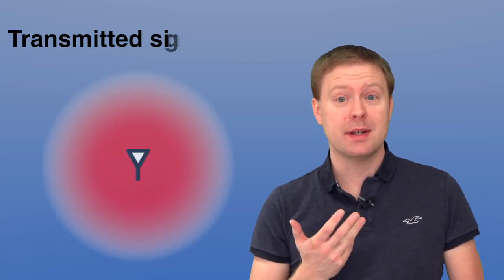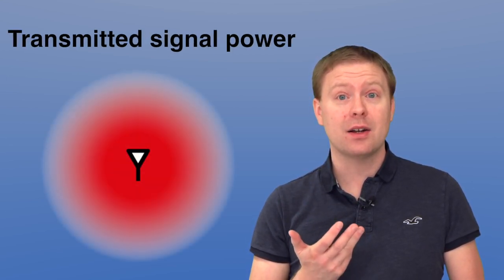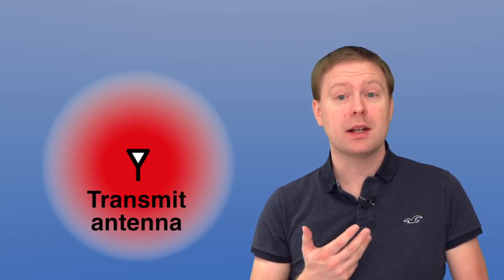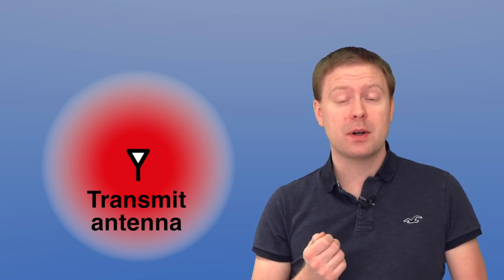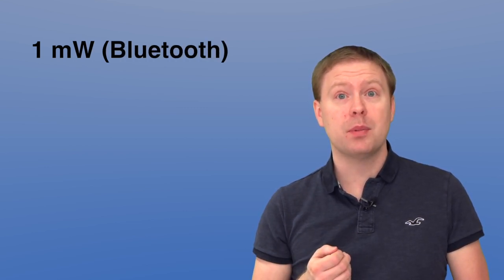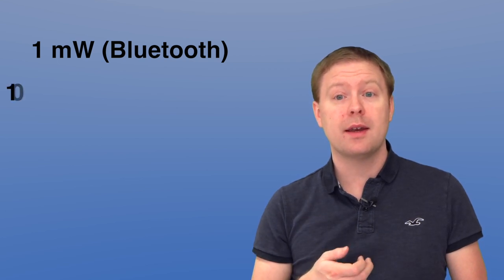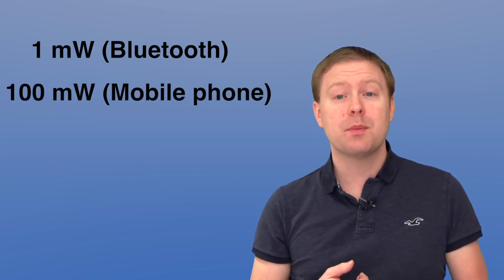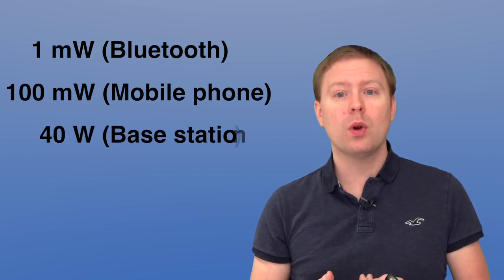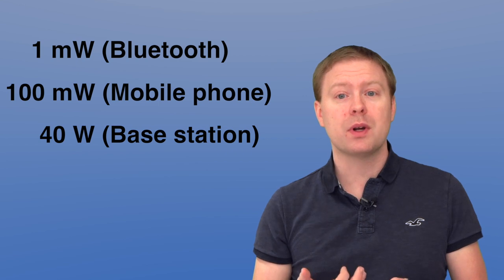First, to understand the received signal power we need to start at the transmitter signal power, which is something entirely different. Every wireless device transmits with a particular power and it's very different depending on what type of device it is. It might start from one milliwatt if you're using Bluetooth, for example, go up to 10 milliwatt or 100 milliwatt, which is quite typical for a mobile phone at least when it's transmitting at maximum power, and then it goes up all the way to 40 watts when we are looking at a major base station put in a tower somewhere.